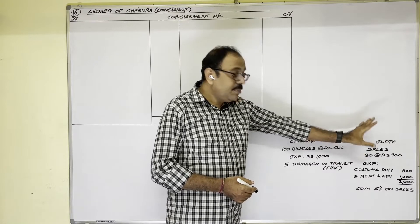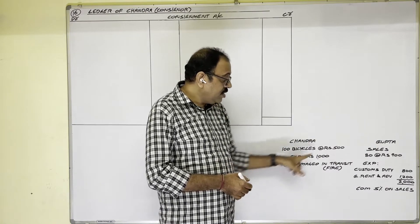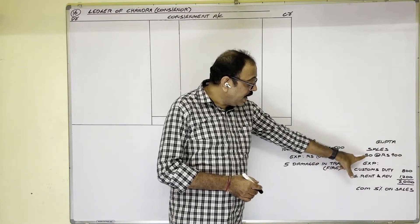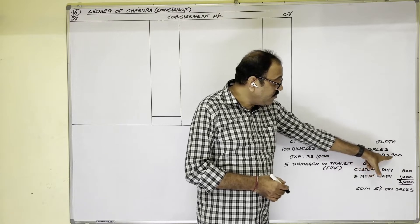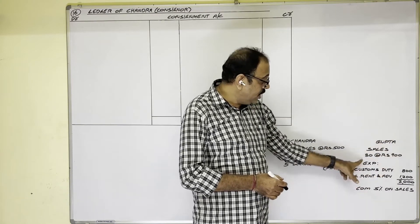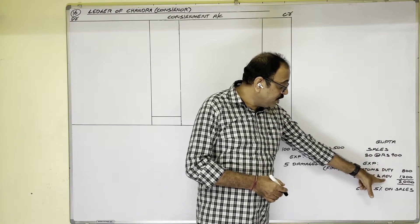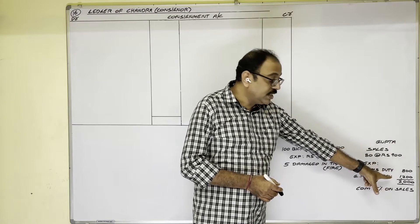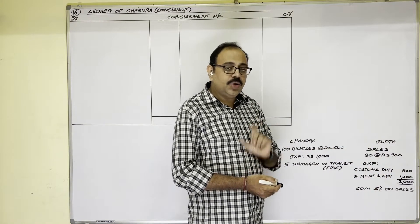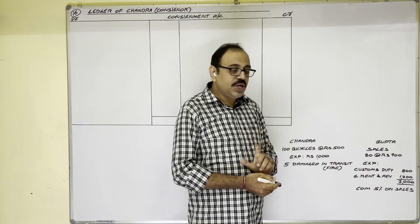Gupta received the remaining bicycles — 100 minus 5 equals 95 bicycles. Out of 95 bicycles he sold 80 bicycles at 900 rupees each. To sell these goods he incurred customs duty 800 rupees and godown rent and advertisement expenditure 1200 rupees, so consignee's total expenditure is 2000 rupees.